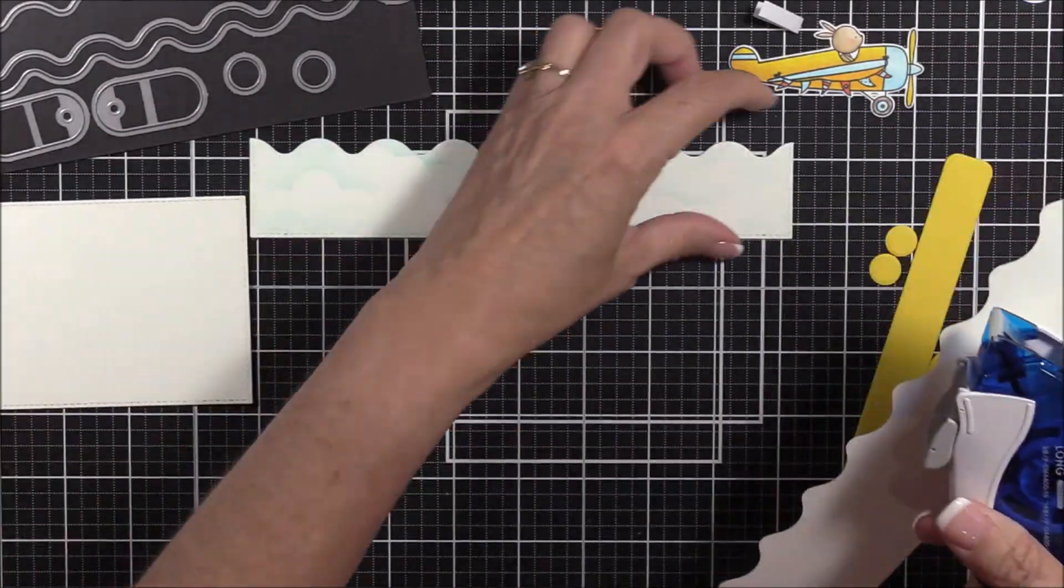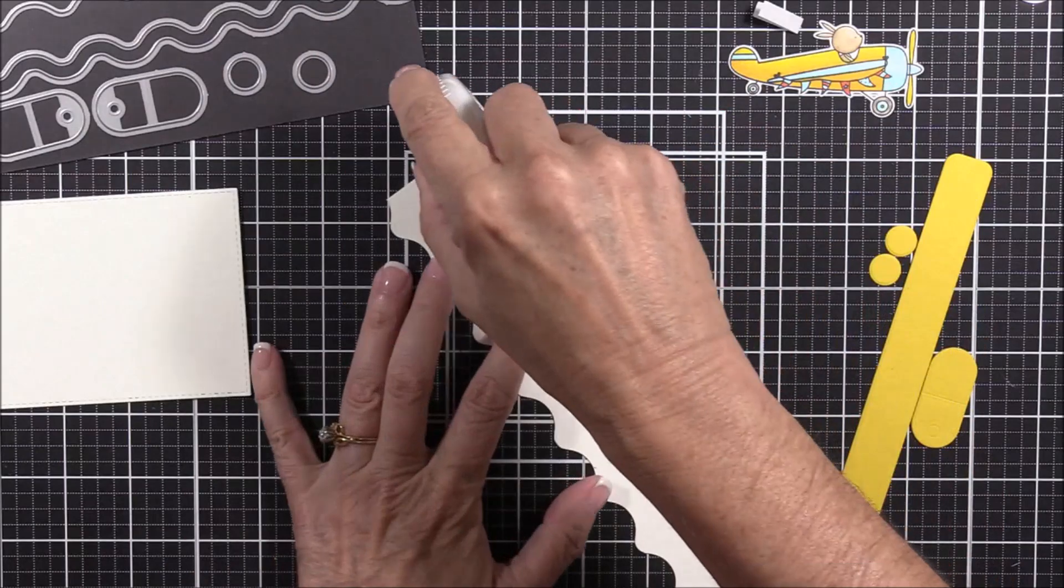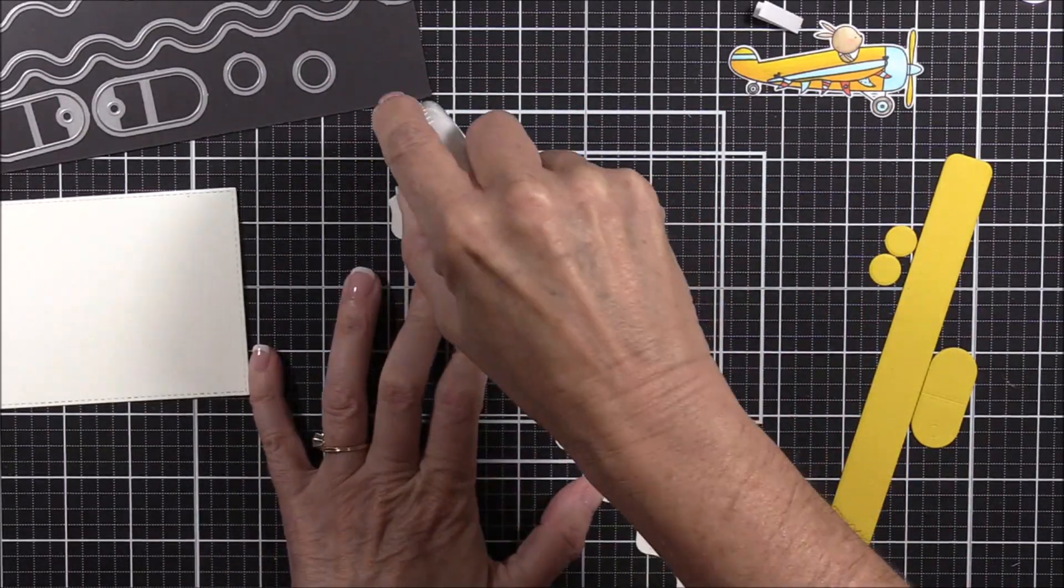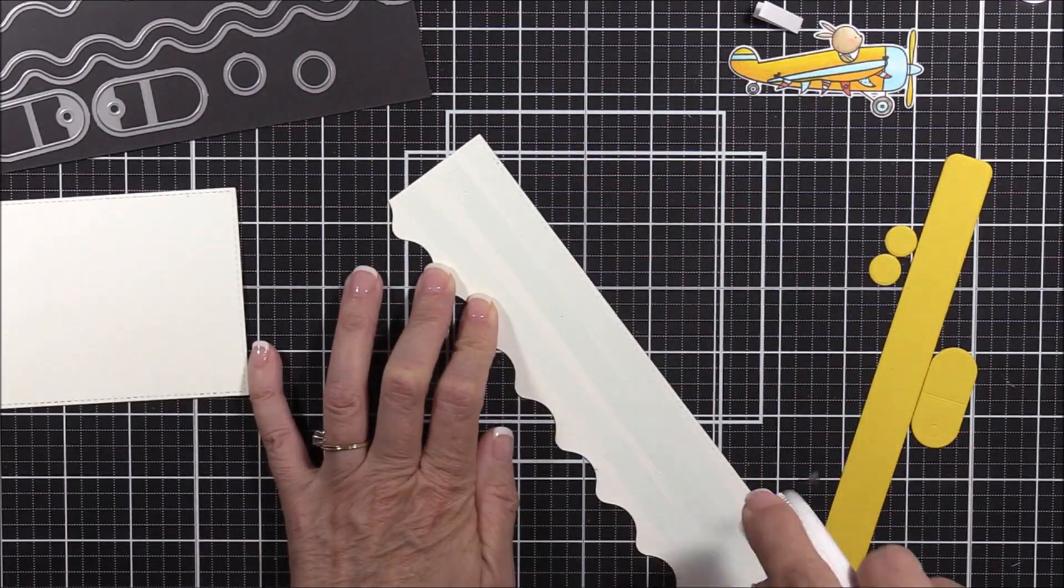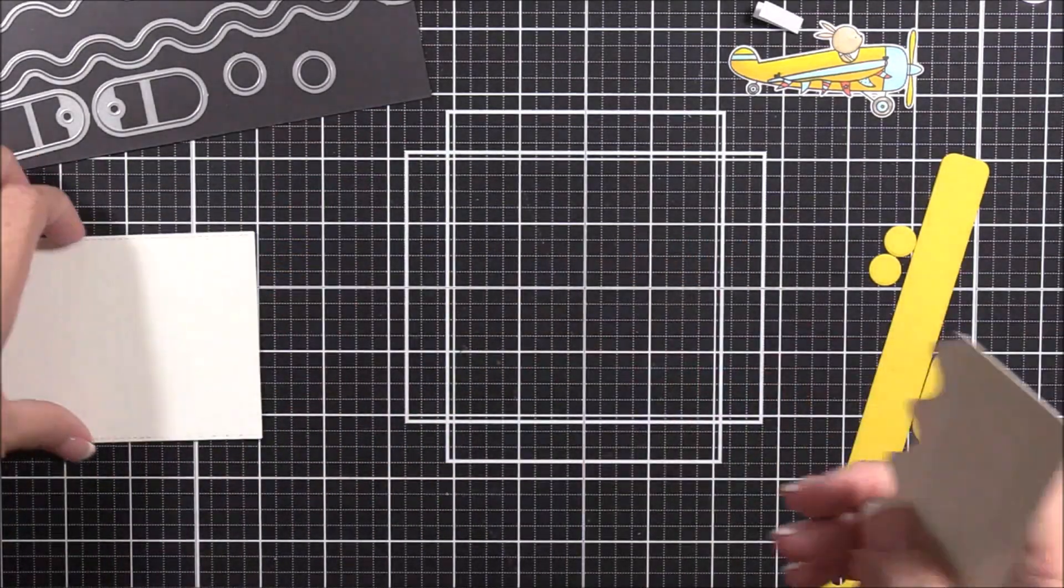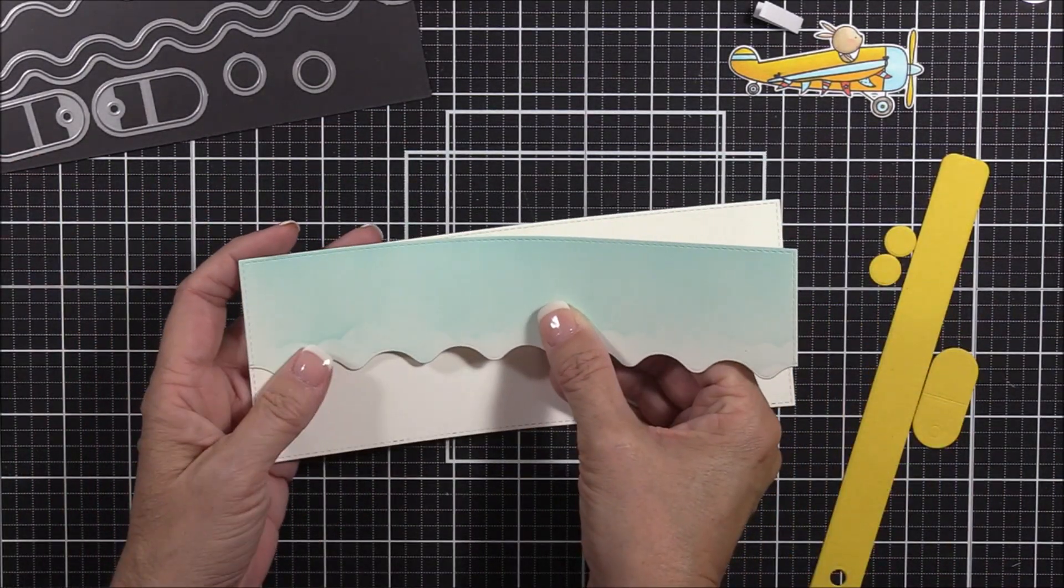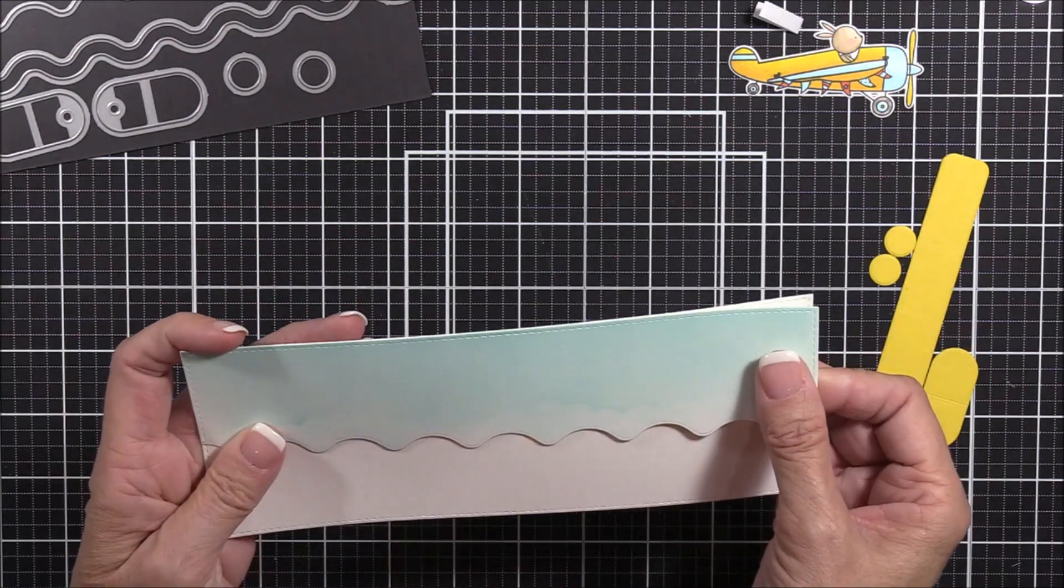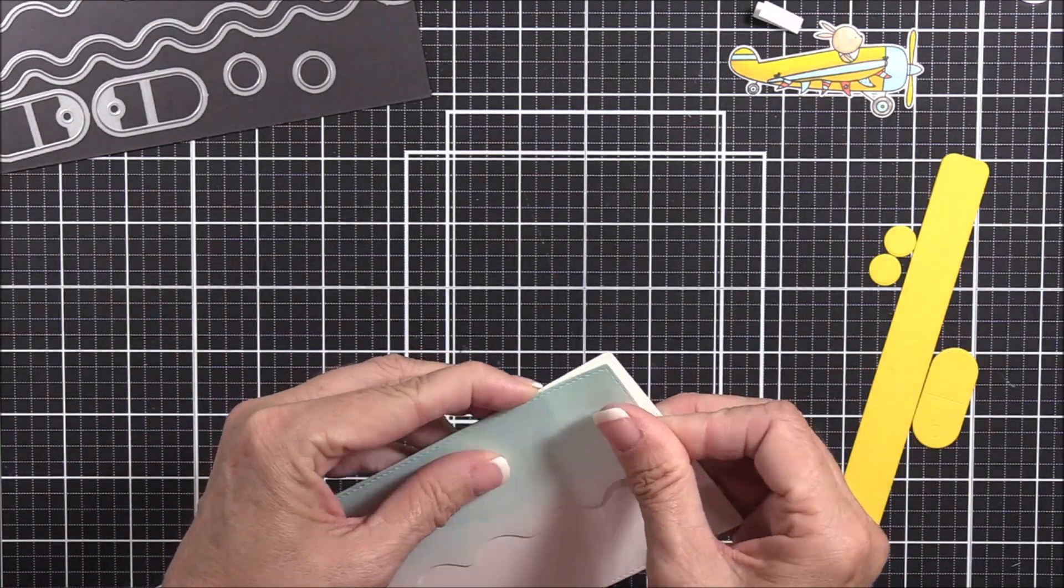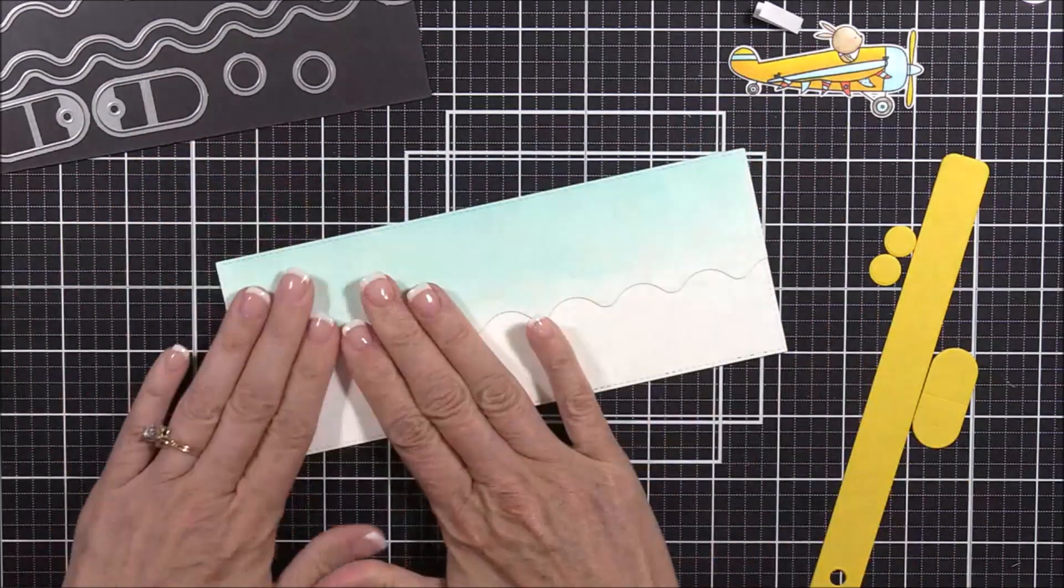Then, I'll adhere the upper portion of that panel to the smooth white panel using my tape runner adhesive. This will give me a full slimline panel that I can build my mechanism on. And then I'll hide it with the other portion of that ink blended panel later on in the video.